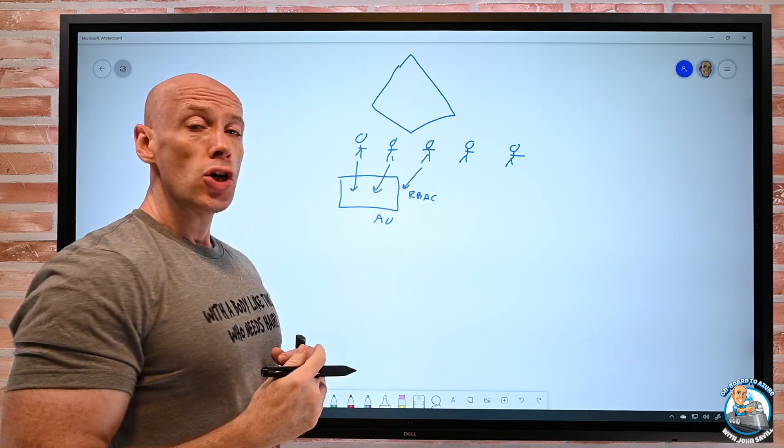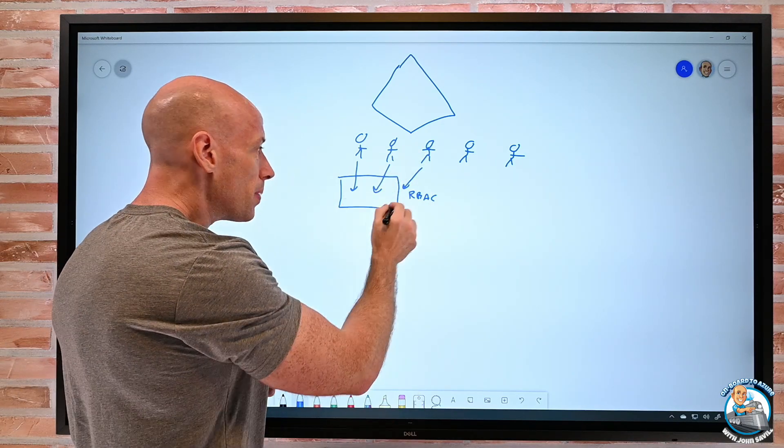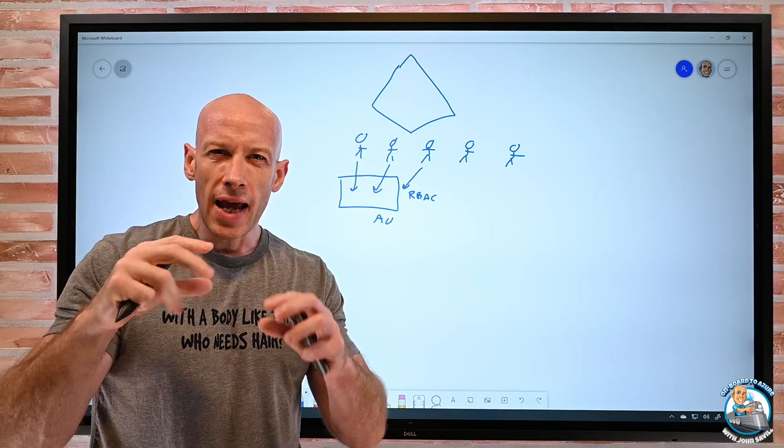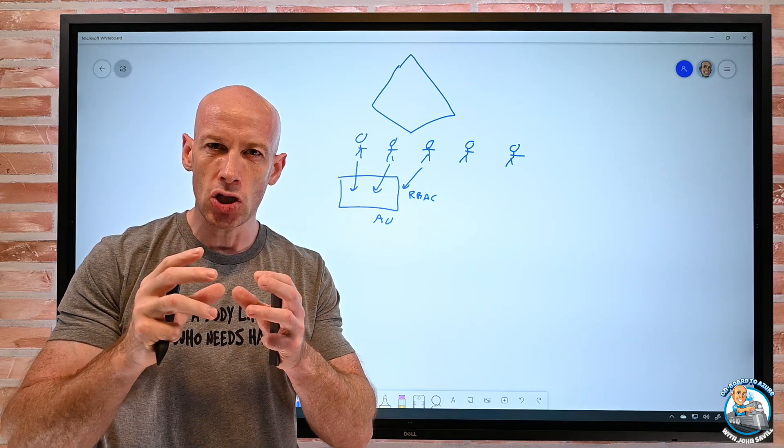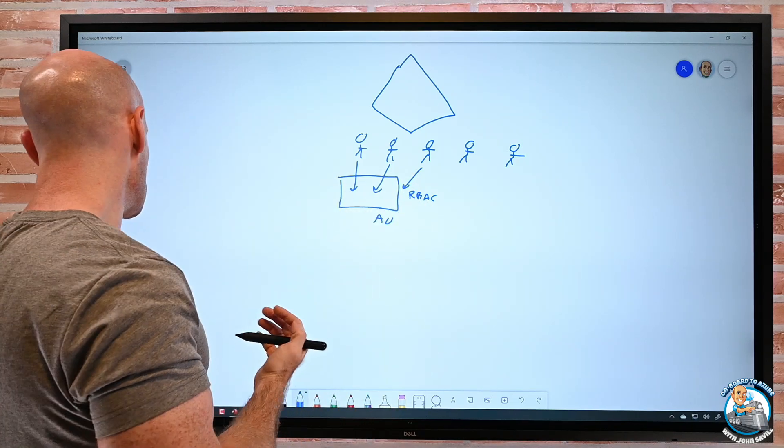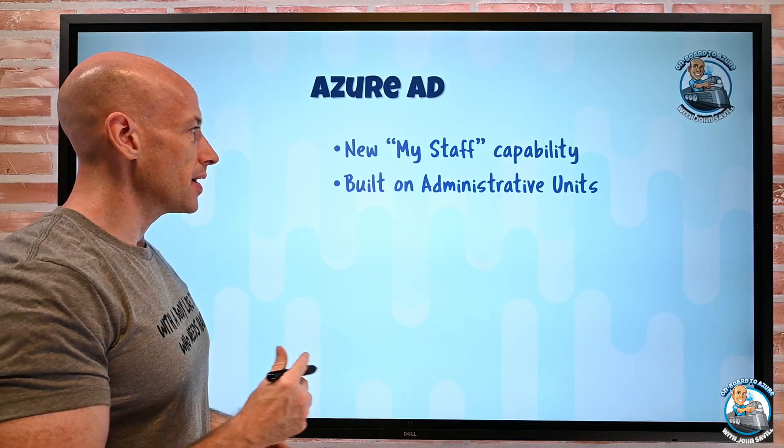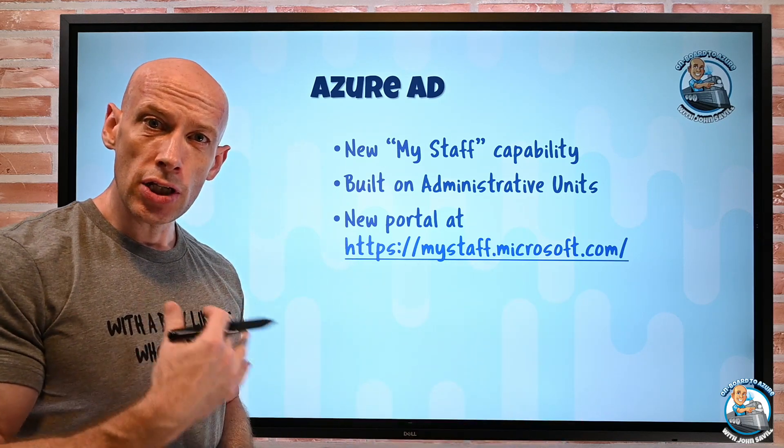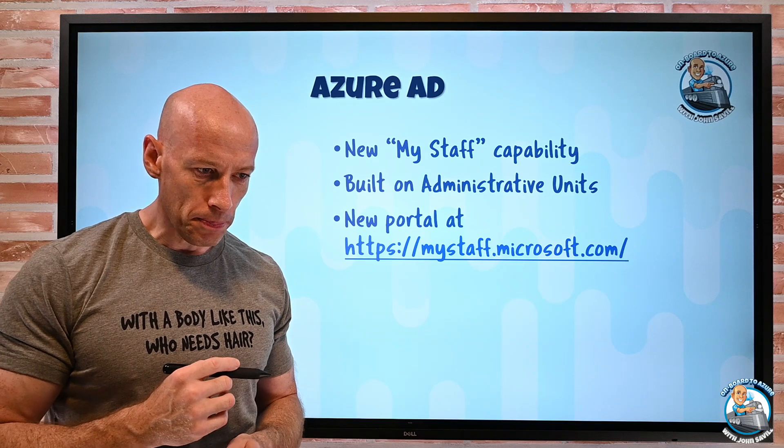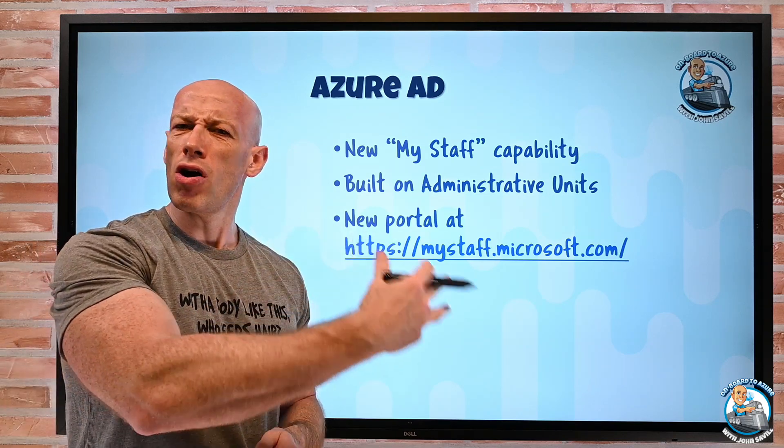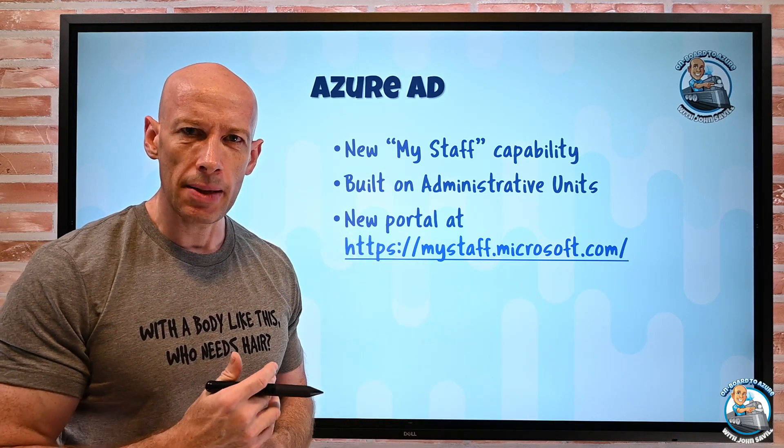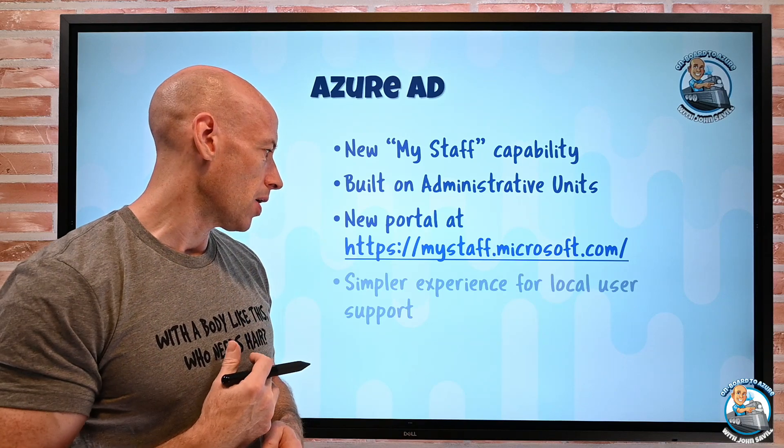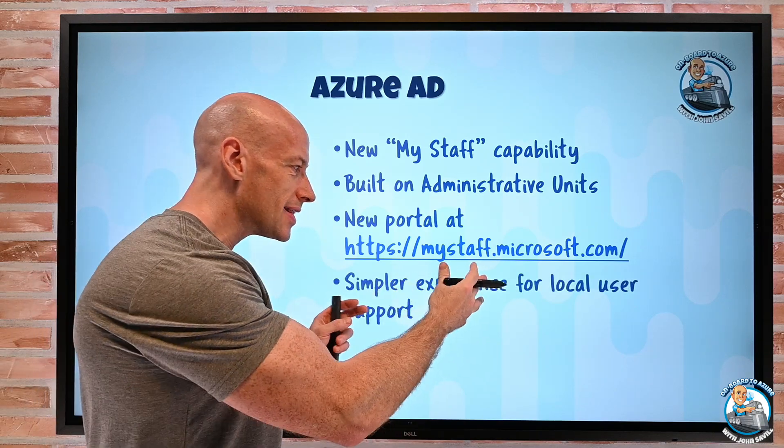And I can put people in that administrative unit. It can be a member of lots of different administrative units. And then I can grant particular people a role, just scoped to that administrative unit. So for example, I say, hey you, you can reset passwords for all the people in that particular administrative unit. So it's giving me the ability to now give someone a constrained, a delegated set of permissions to a subset of Azure AD. There's now a new portal.